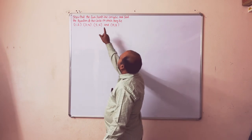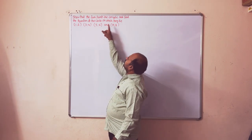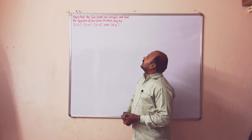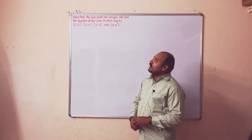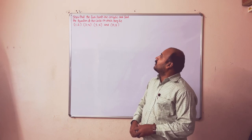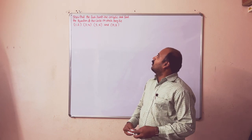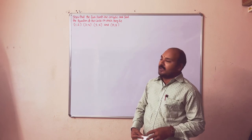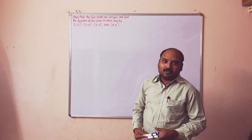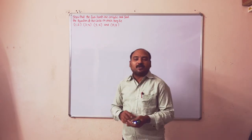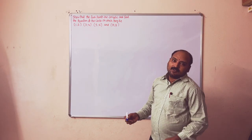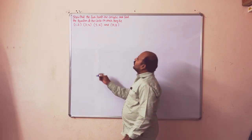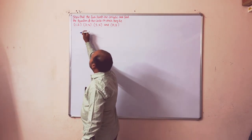Show that the four points are concyclic and find the equation of the circle on which they lie. To solve these types of problems, we need to consider the required equation of the circle.